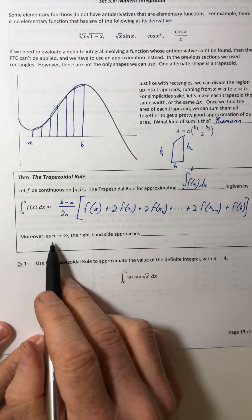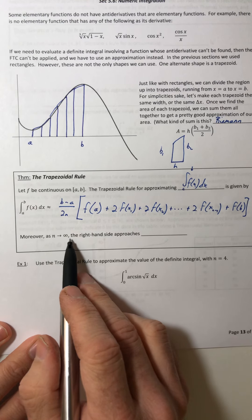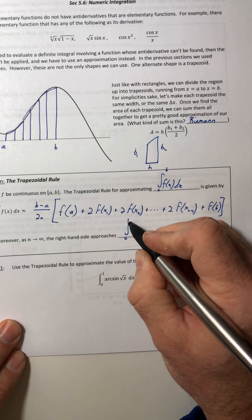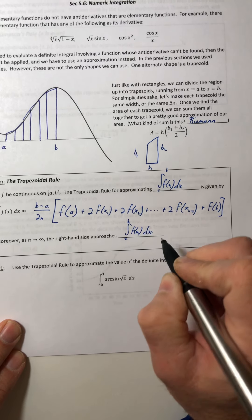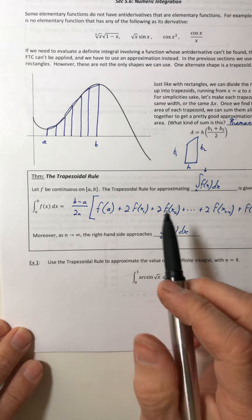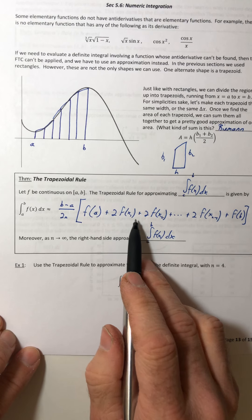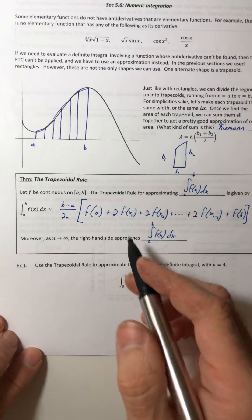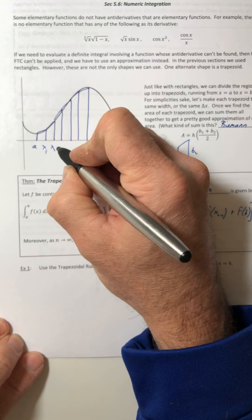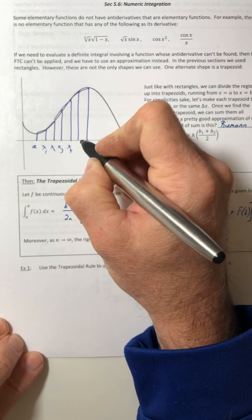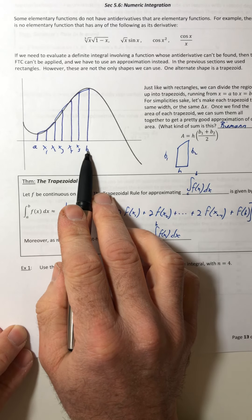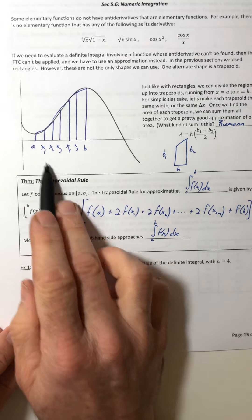So moreover, as the number of trapezoids or as n approaches infinity, the right hand side approaches the integral a to b of f of x dx. So if you can smash an infinite number of trapezoids in there you do get the actual area. All right, so some of you are going, what's this x1 x2 and where is that? That's just how you partitioned it. So just like the rectangles, so x1 x2 x3 x4, and in this case we have to go to x5, and then your last x value is the b and the first one is always the a.